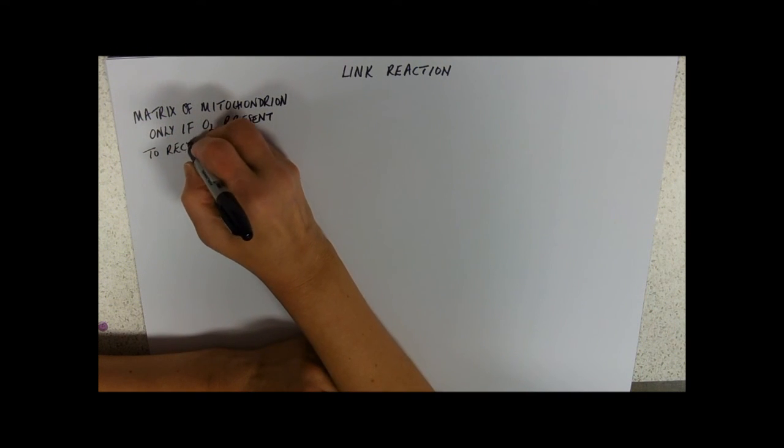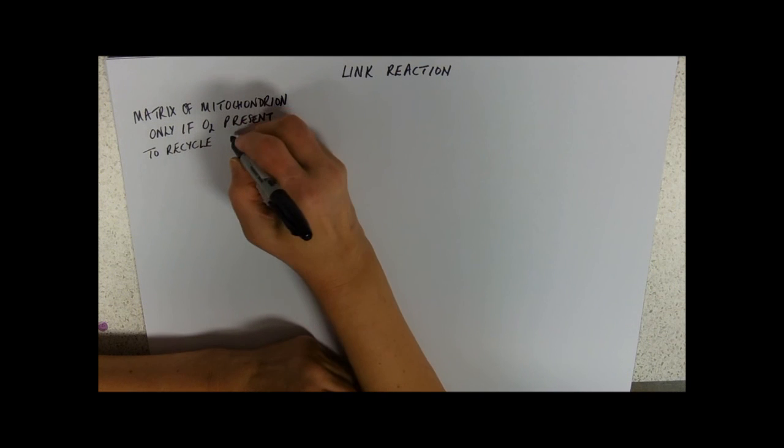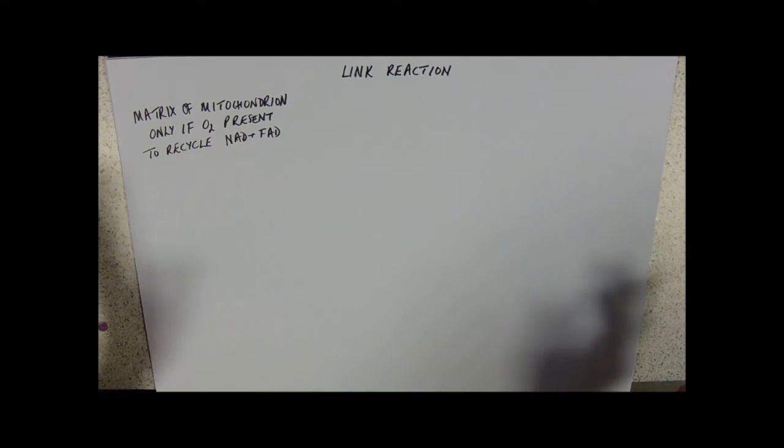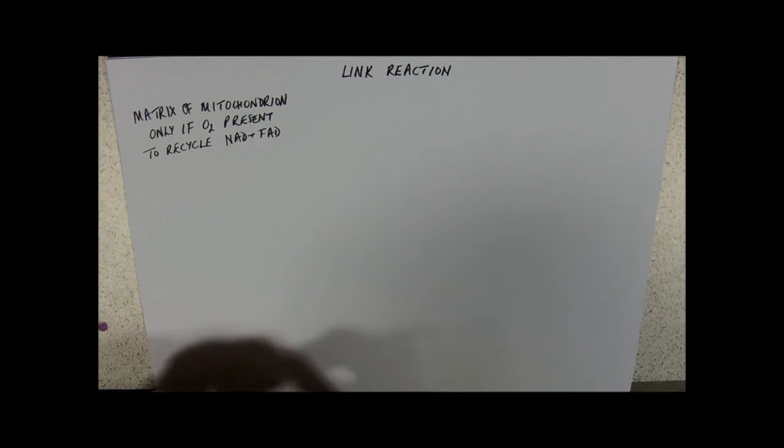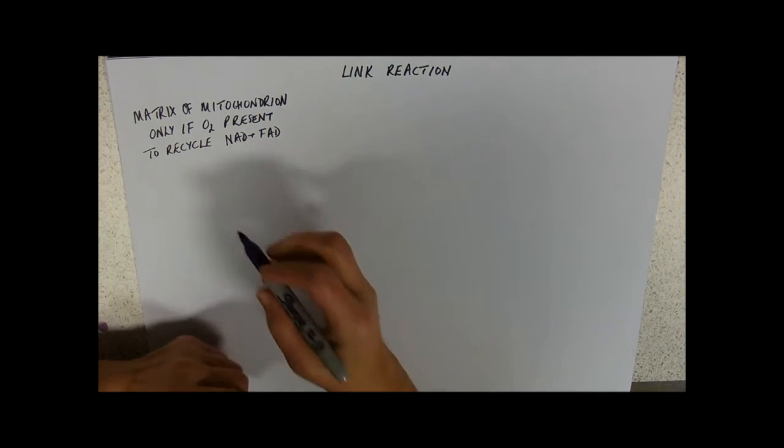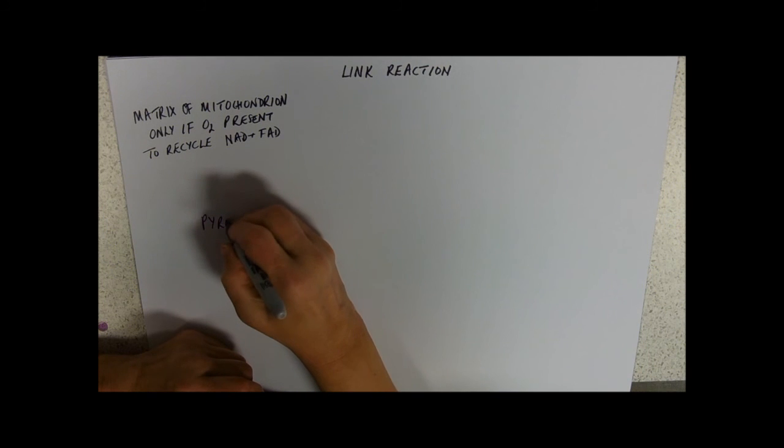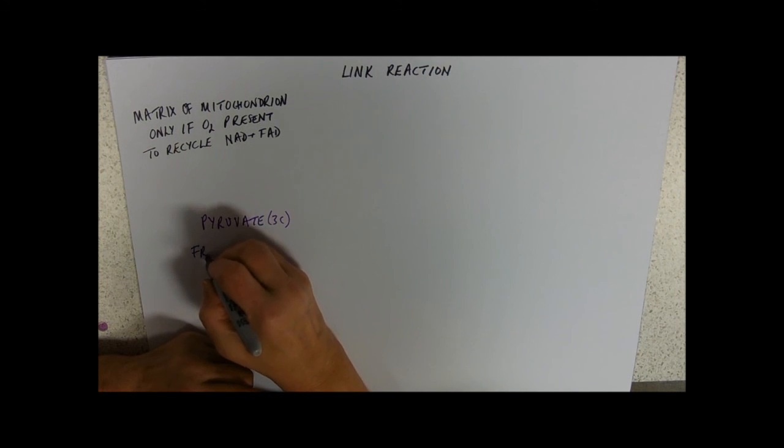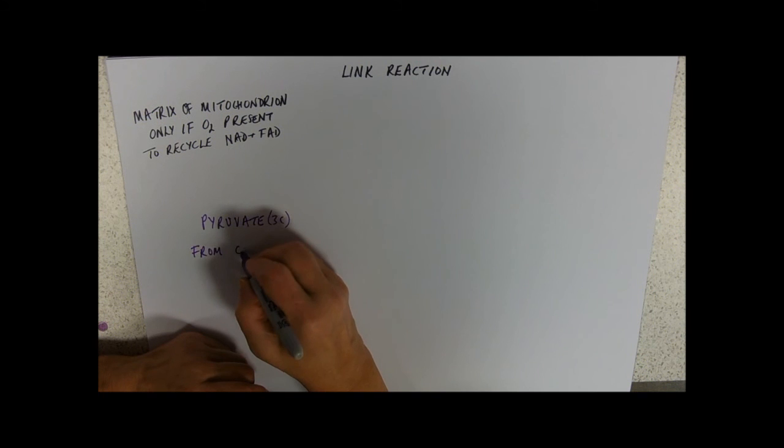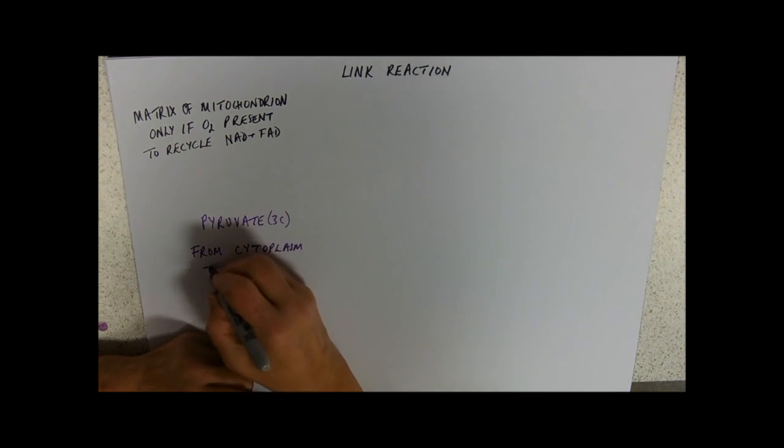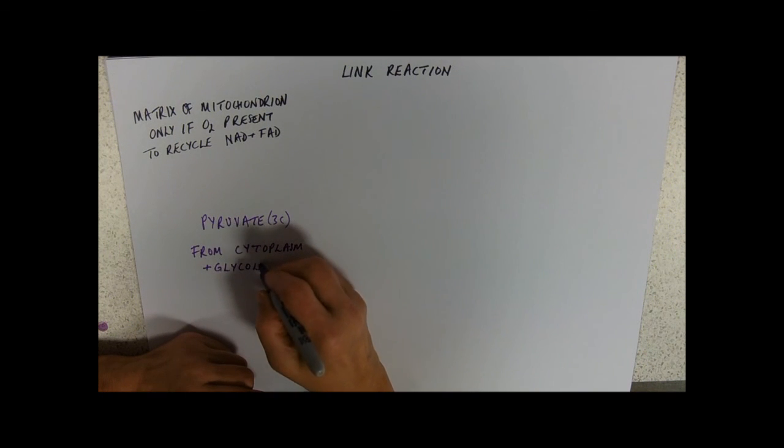To recycle NAD and FAD. If it can't do that, then it's not going to happen. Remember where we started from? We started off with our pyruvate. It's got three carbons and this has come in from the cytoplasm and the glycolysis reactions.